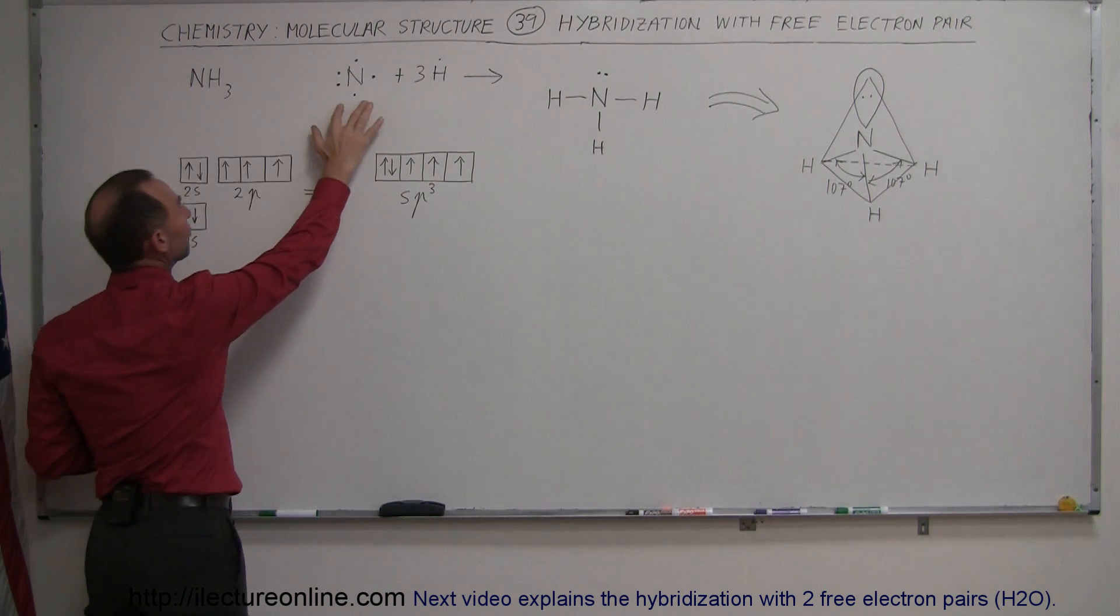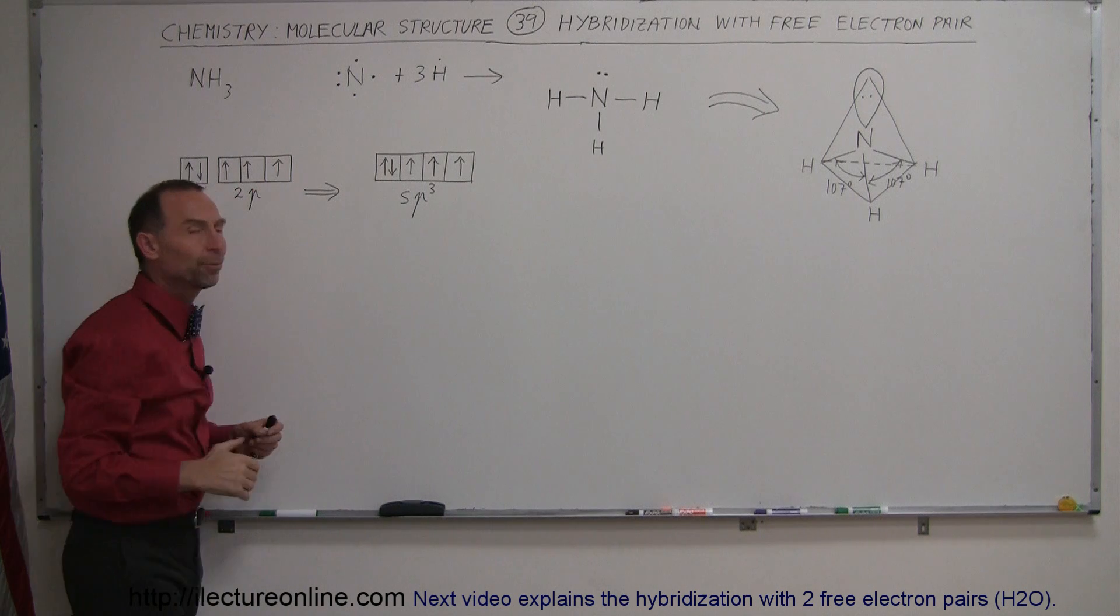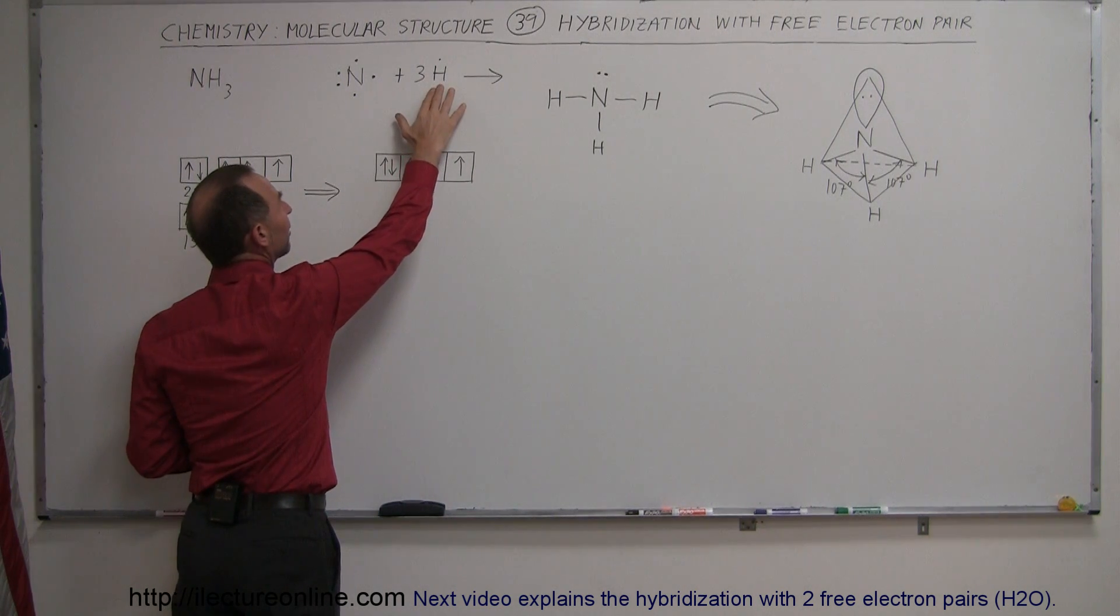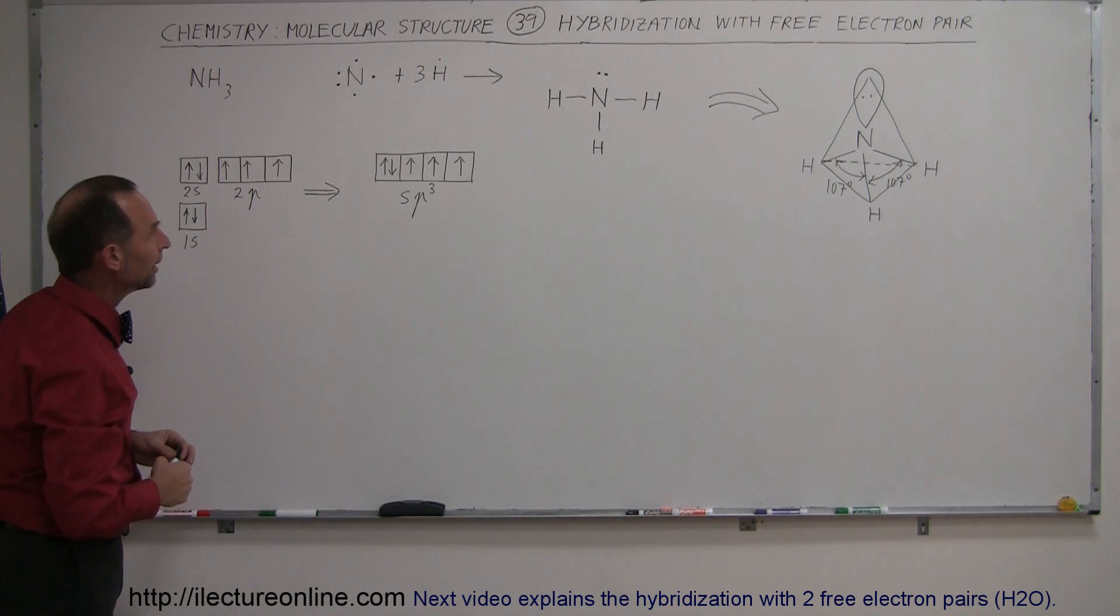Notice that nitrogen has five valence electrons which could be used in bonding. Hydrogen has one valence electron in each atom, so each one of those, of course, is available for bonding.